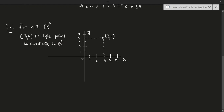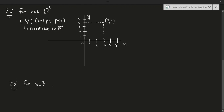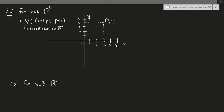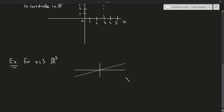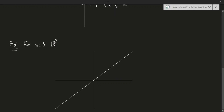For n equals 3, as you can probably imagine, this would be the three-dimensional space, R3. We can describe our three-dimensional space with x, y, and z axes. For example, if we had the point (1, 2, 3), this would be a coordinate in R3, and it would be a 3-tuple, or triple, because there are three numbers in it.